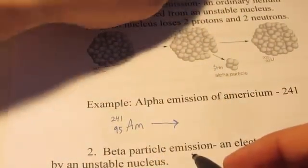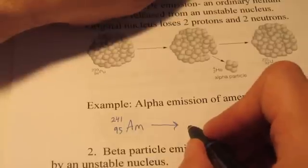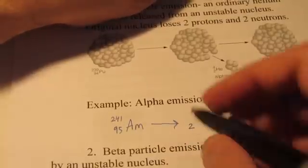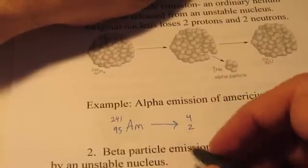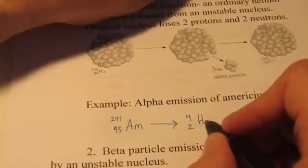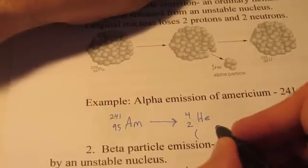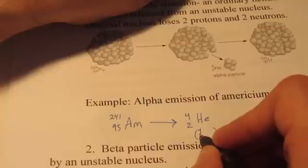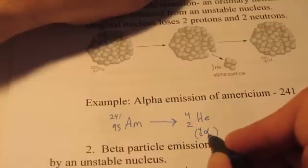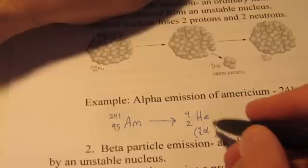Now, it emits an alpha particle. So it's going to lose two protons and two neutrons, so a mass of 4. And we will symbolize that with the element symbol for helium. By the way, sometimes that is symbolized with 4 over 2 and the Greek letter alpha. Either way is fine with me.